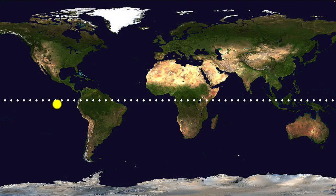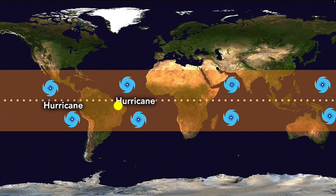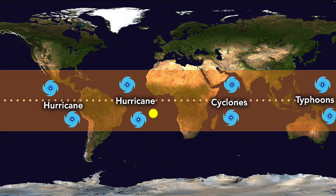Tropical cyclones are intense storms that form over warm tropical or subtropical waters. They go by different names depending on where they occur, like hurricanes in the Atlantic, typhoons in the Northwest Pacific, and they're just called cyclones in the Indian Ocean and the Southwest Pacific. But it doesn't matter what their names are — they all form in the same way.